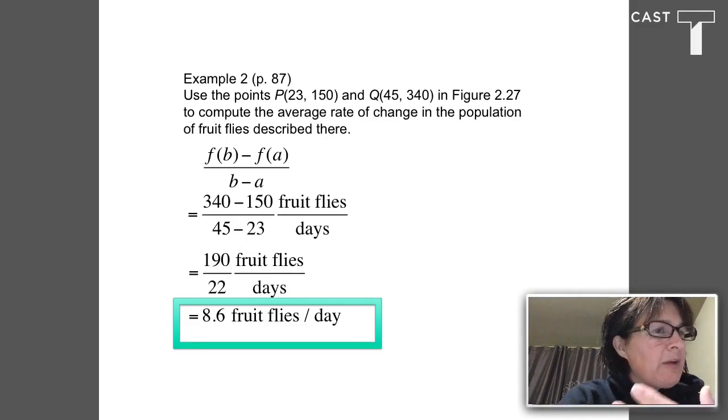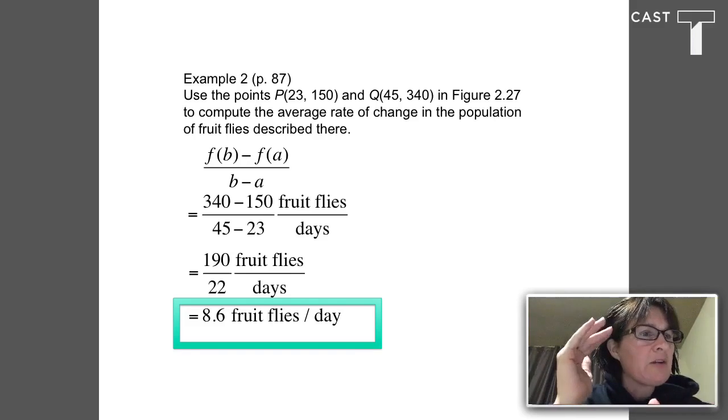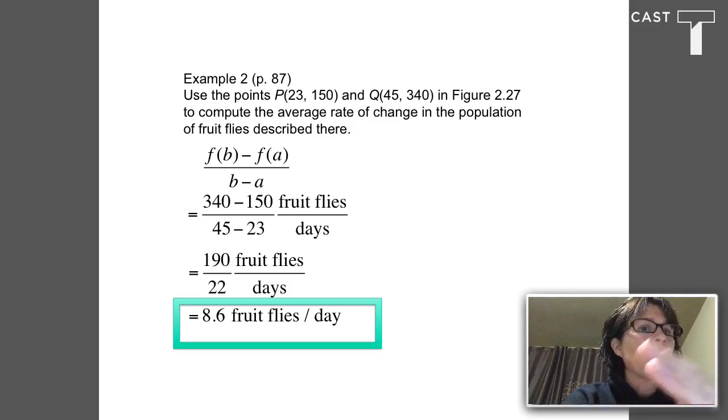When we compute average rate of change in context, we want to keep the units whenever possible. Sometimes just getting the units right is worth a point on the AP test. Think about those y values: 340 minus 150 has units of fruit flies.